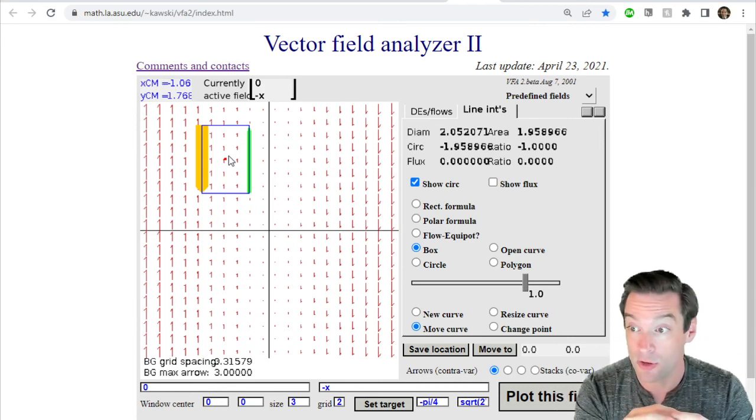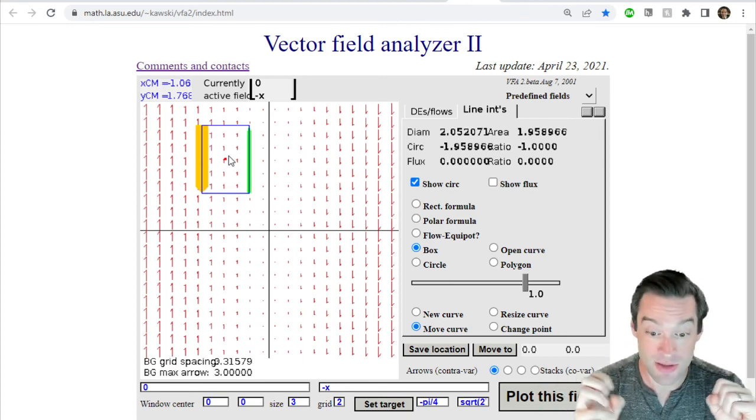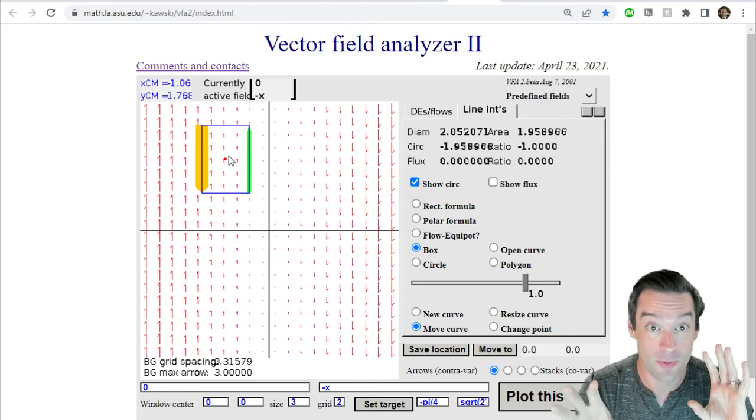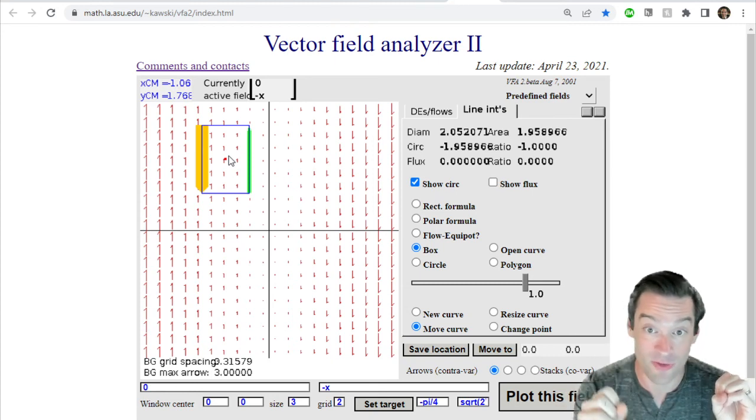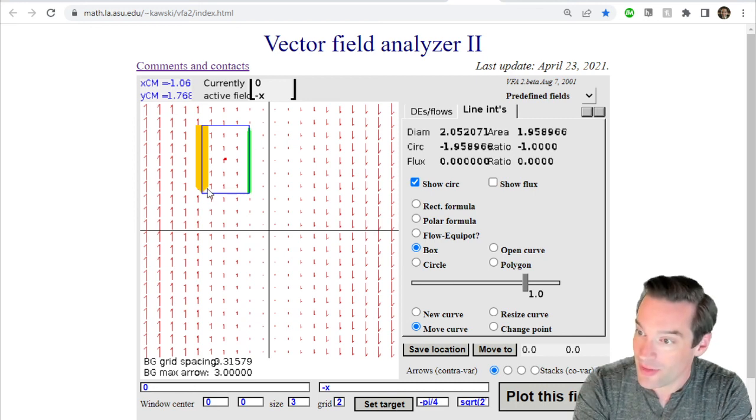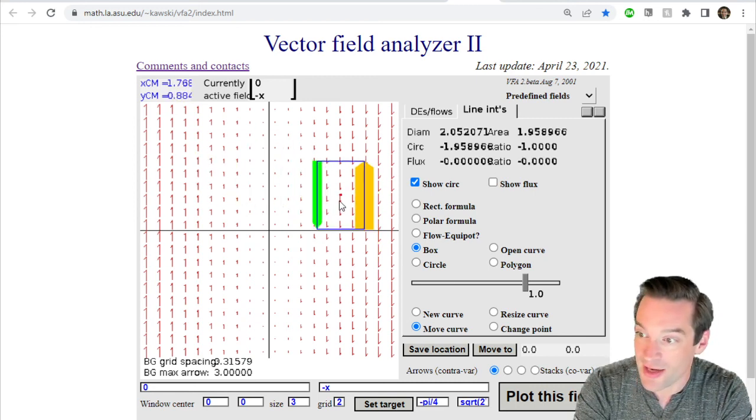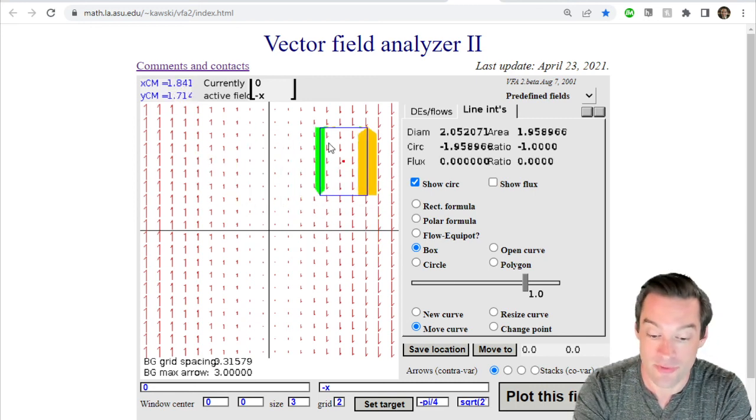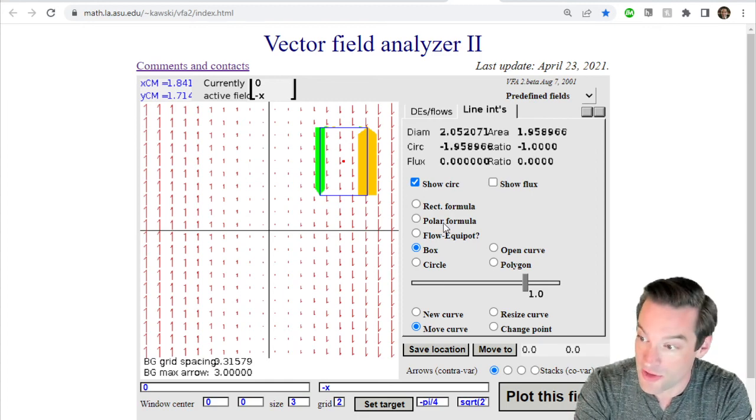When those two things come together in something called Green's theorem, this is the fundamental theorem of calculus-like object that relates that integral perspective with that derivative perspective for vector fields and their circulations, we'll see why we should have expected that the total circulation is just going to be equal to negative one times the area of whatever is my closed curve along which I'm doing my circulating.